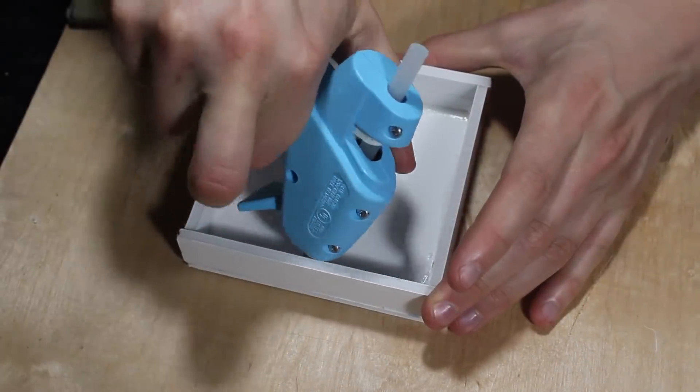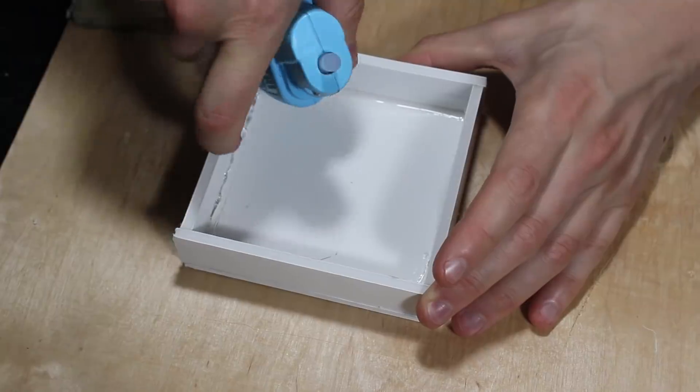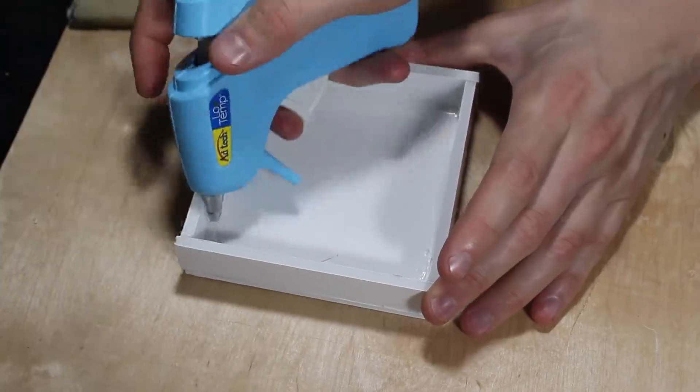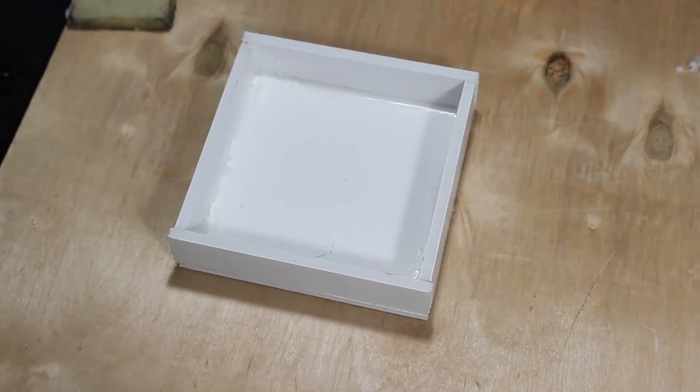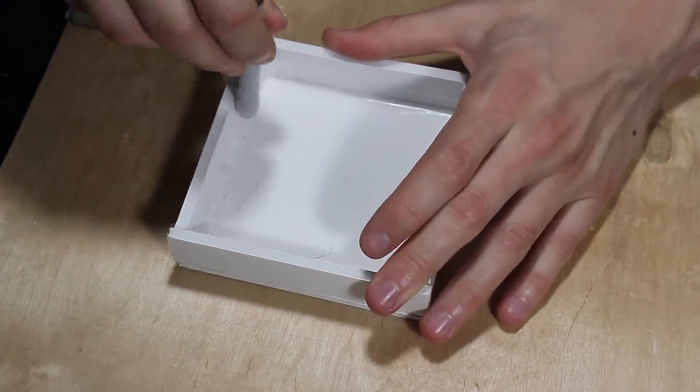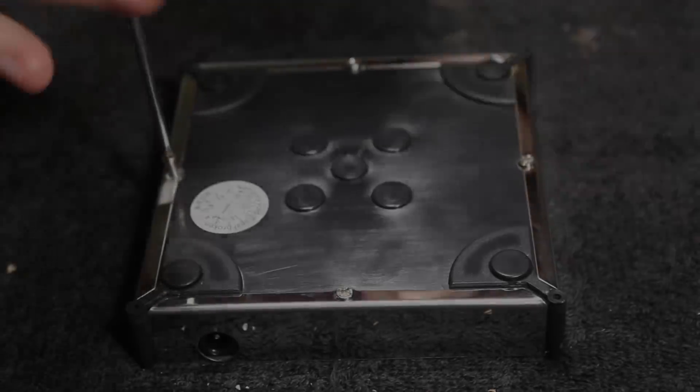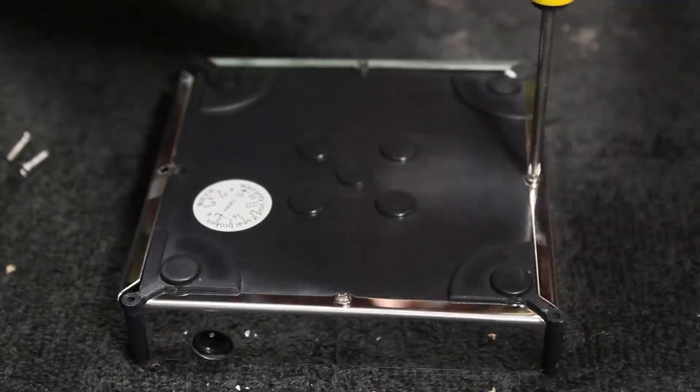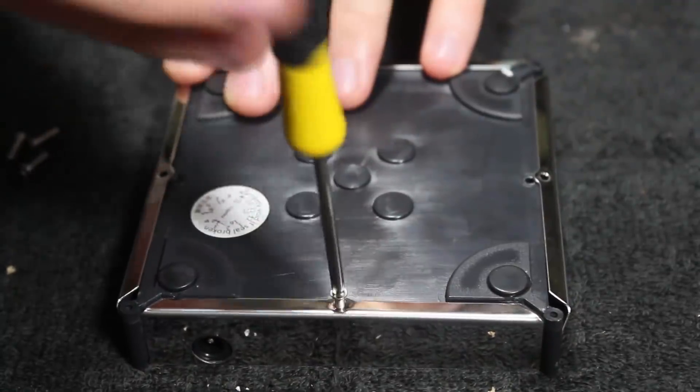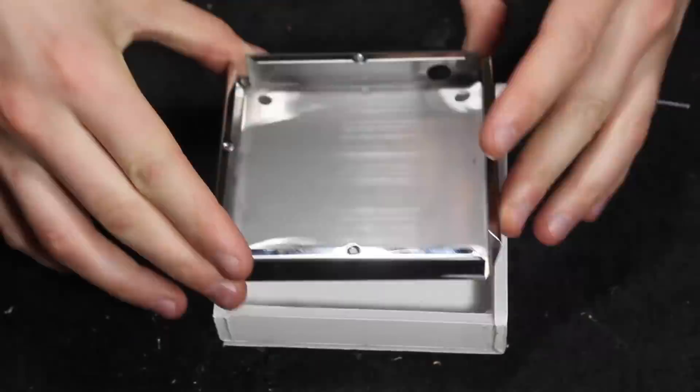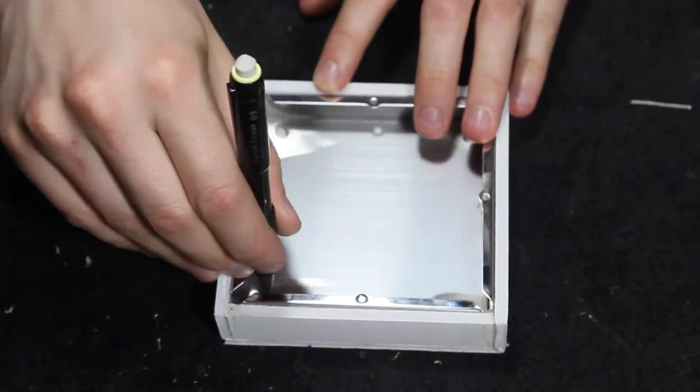Afterward I used some hot glue to reinforce the entire structure. Then I disassembled the platform to line it up with the box that I just made. I did this to account for the power cord and the lights.